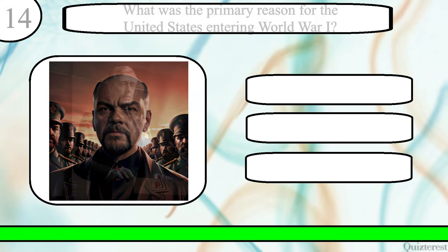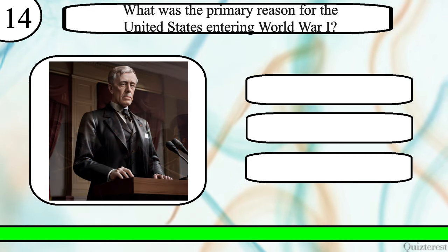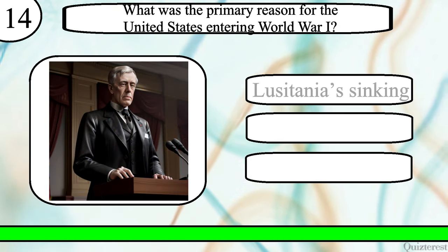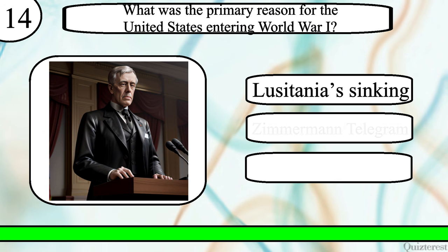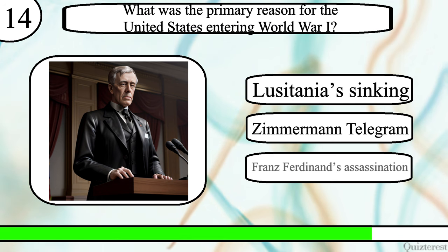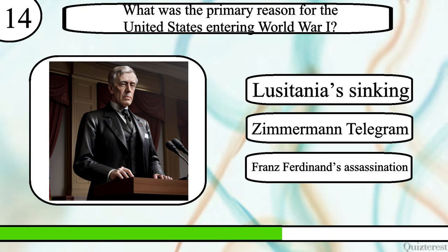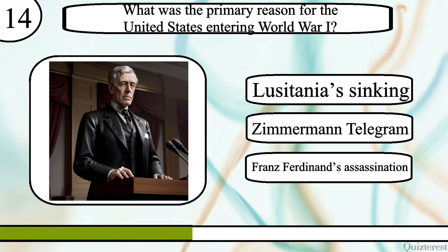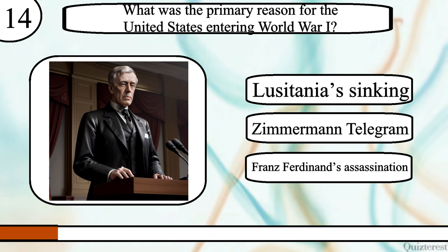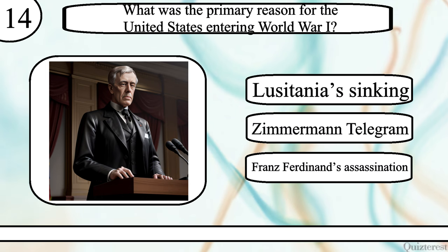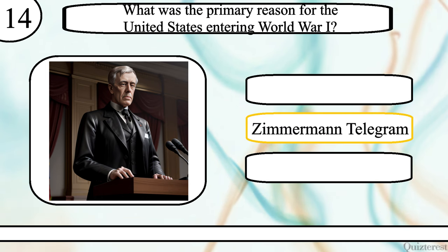Question 14. What was the primary reason for the United States entering World War I? Lusitania's sinking, Zimmermann telegram or Franz Ferdinand's assassination? The correct answer is Zimmermann telegram.